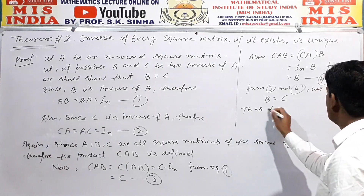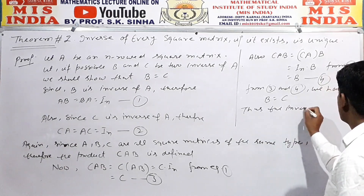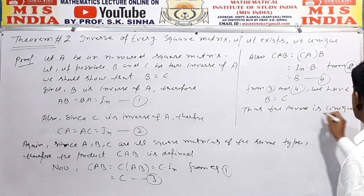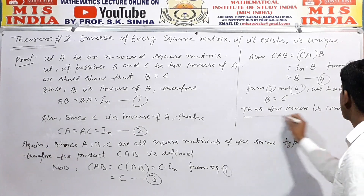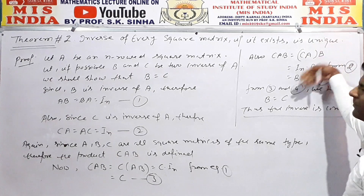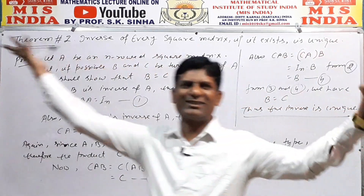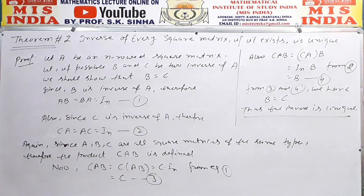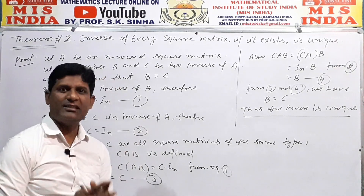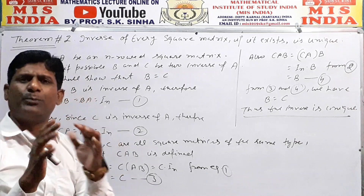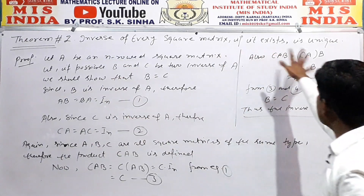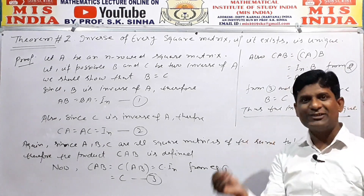Thus, the inverse is unique. The inverse of every square matrix, if it exists, is unique.